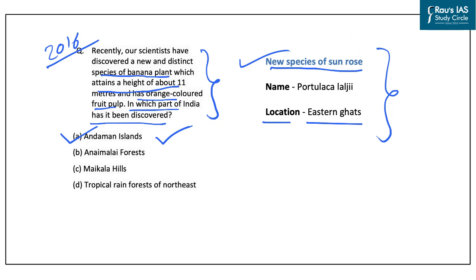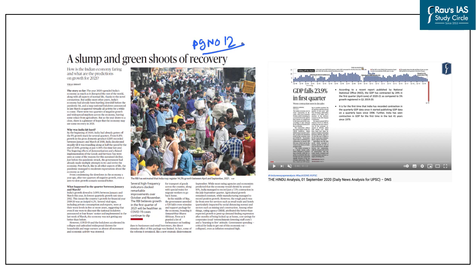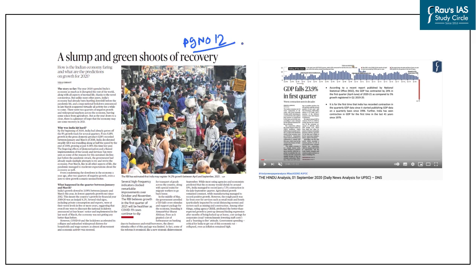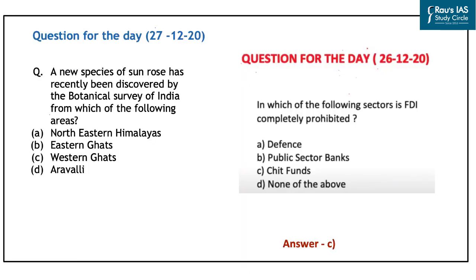The next article on page number 12 is related to the economic slowdown India witnessed because of the COVID-19 lockdown. The slowdown has been both due to the pandemic-imposed lockdown and structural issues in the Indian economy. The structural issues and steps the government needs to take have been covered in the DNS of 1st September 2020. With this, we conclude today's discussion.